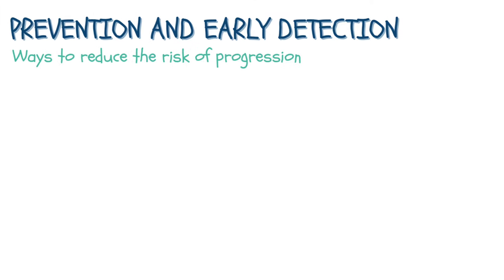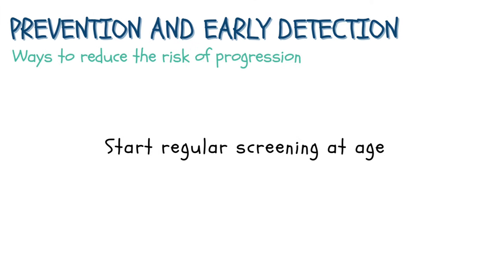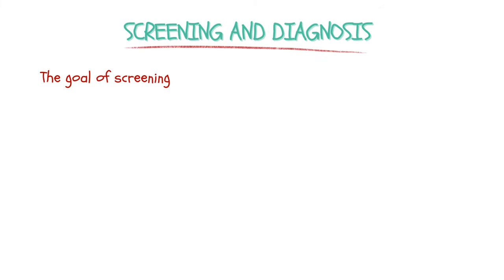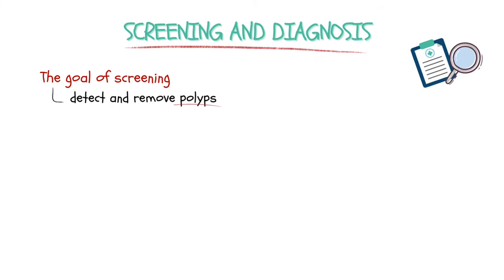To reduce the risk of progression and death, start regular screening at age 45 or earlier if you are at high risk of colorectal cancer. The goal of screening is to detect polyps and remove them before they develop into colorectal cancer, or to identify colorectal cancer in its early stages when the disease is potentially curable, and therefore prevent progression and death.